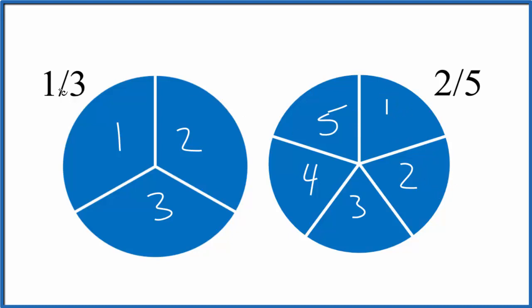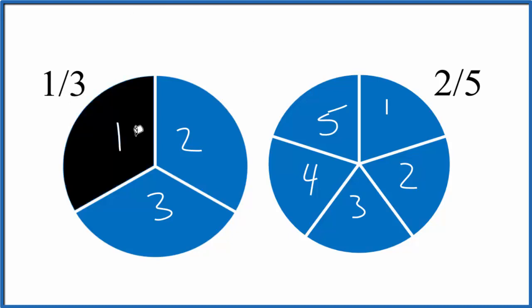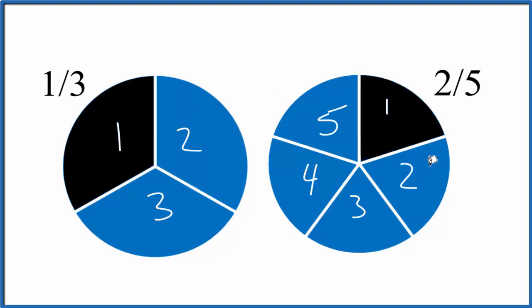So we come back over here, we're going to shade in one of the three pieces. So we shade this one part in, and that's one-third. Over here we'll shade in two pieces. That's two-fifths, part over the whole.